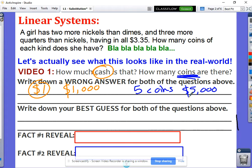So just by guessing some wrong answers, it gives us context for what could be the best guess or our best answer.